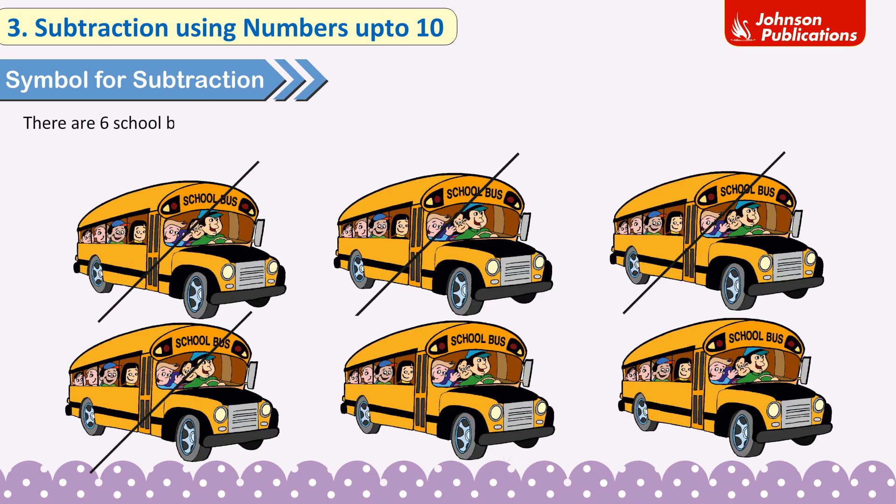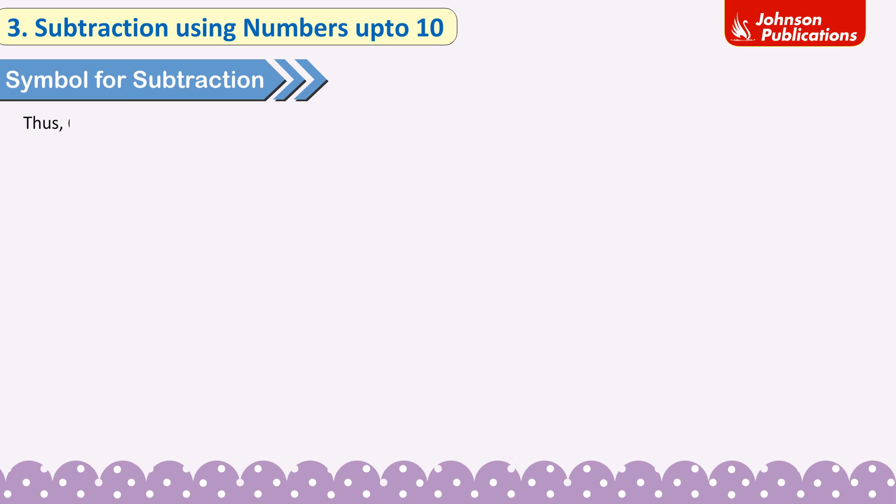There are 6 school buses. 4 take away, or 6 minus 4, is equal to 2. Thus, 6 take away 4 is 2. We write it as 6 minus 4 equals 2.